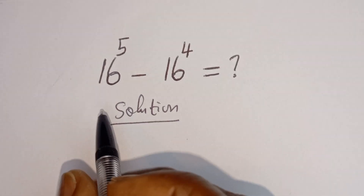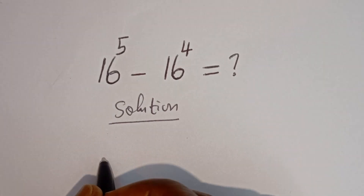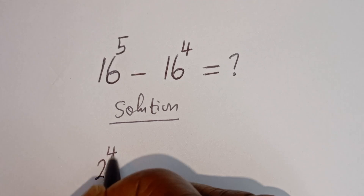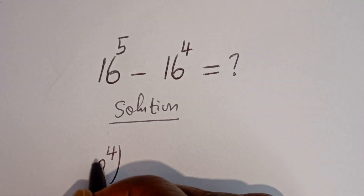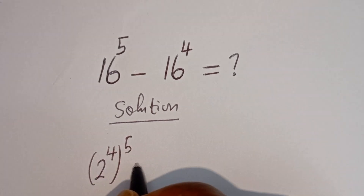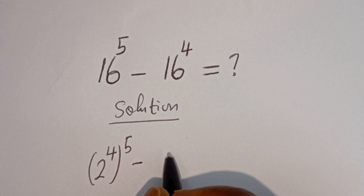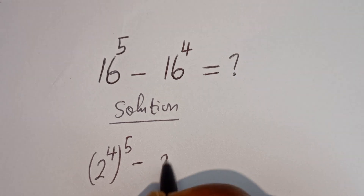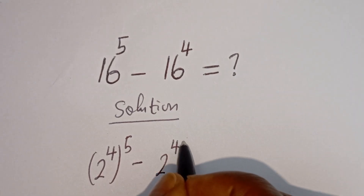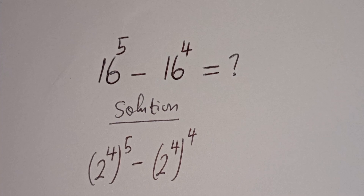Then here, 16 to the power of 5 can be written as 2 to the power of 4, to the power of 5, minus 16 to the power of 4, which can be written as 2 to the power of 4, to the power of 4.